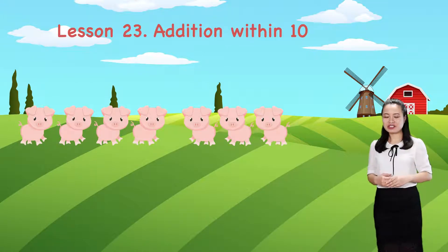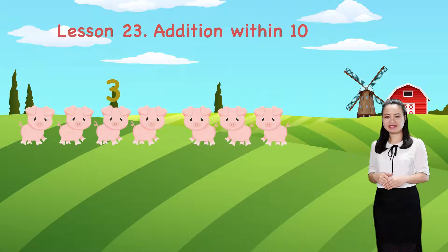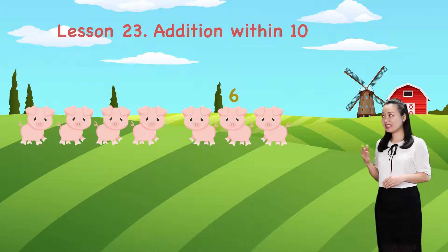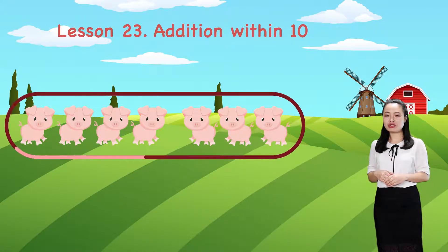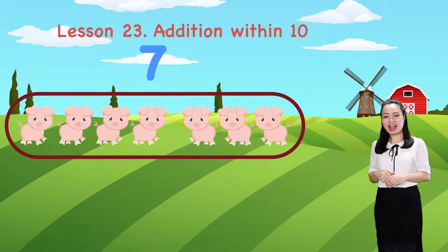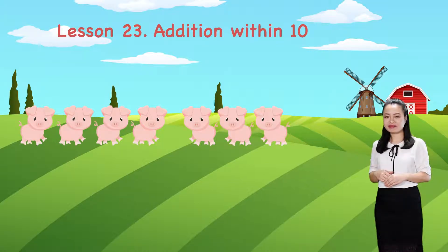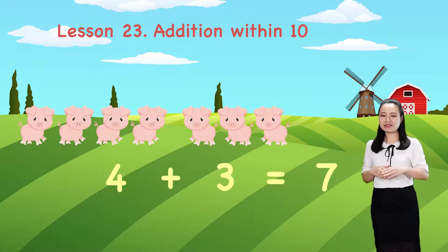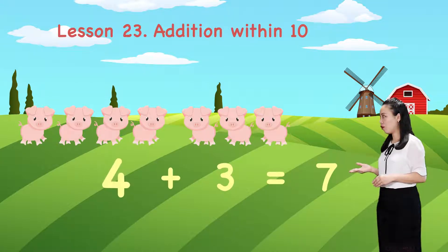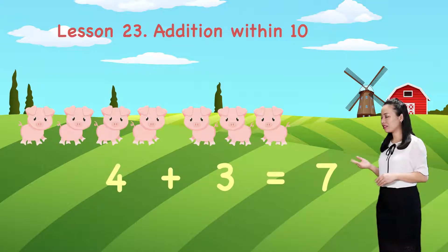How many total pigs are there on the farm now? Let's count. 1, 2, 3, 4, 5, 6, 7. So, the total is 7 pigs on the farm now. We write in numerals. We say, 4 plus 3 equals 7.